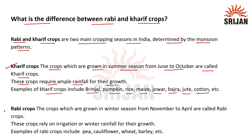Next, we have Rabi crops. The crops which are grown in winter season from November to April are called Rabi crops. These crops rely on irrigation or winter rainfall for their growth. Examples are pea, cauliflower, wheat, and barley.